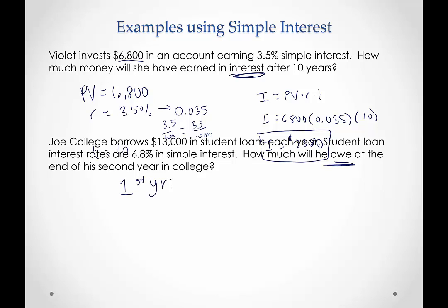So the first year, we're talking about $13,000 is our present value. And the interest rate is 6.8%, which we want to convert to 0.068. And the time, so this is talking about the first year. By the end of the second year, he will have had this $13,000 for two years. He borrowed it at the beginning of his freshman year. Now he's at the end of his sophomore year. It's been two years.